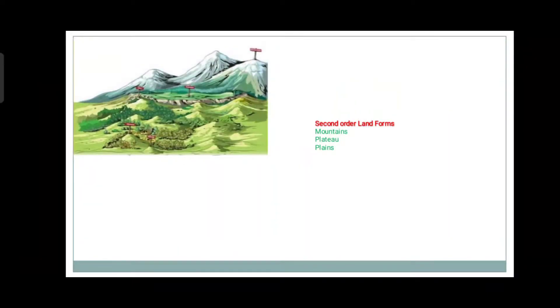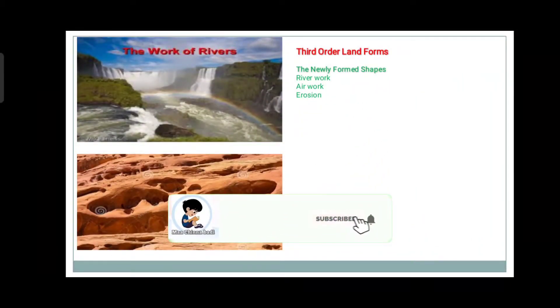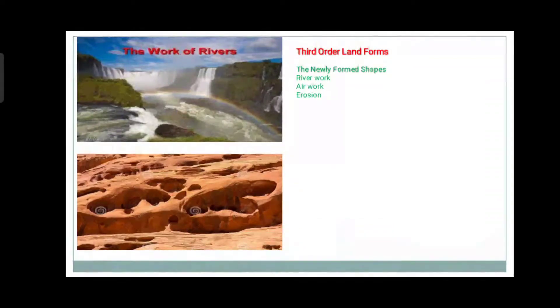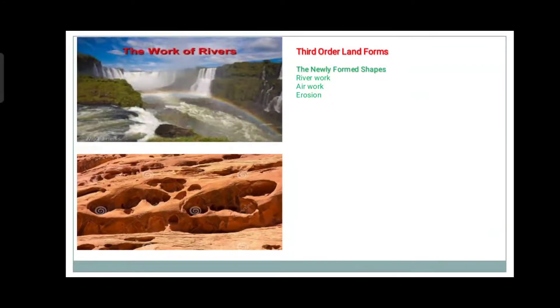The third one is the third order landforms. Third order landforms are the newly formed shapes on the earth, formed by river work, water work, or air work, whatever it may be. These are called third order landforms, and there are so many types of them.